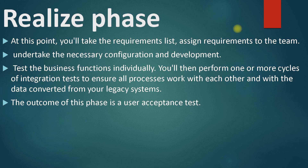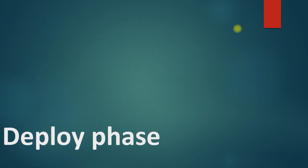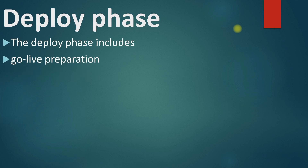The key outcome of the Realize phase is the User Acceptance Test. Whatever configuration has been done, you take approval from your users that everything agreed upon is working correctly. The business confirms that the processes are supported and working, and that the data is accurate and complete — everything needed in the production system is ready. This signals that you are all set to go live.